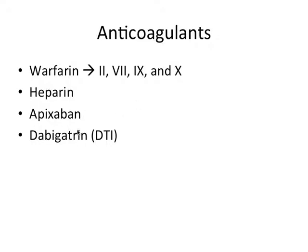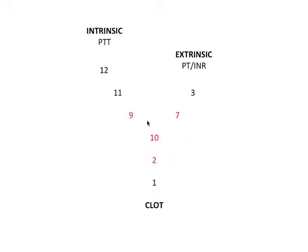Apixaban, also known as Eliquis, directly inhibits factor 10a. So that's how it stops the process. Now dabigatran is a direct thrombin inhibitor, or DTI, because it binds directly to thrombin, or factor 2a at its active site, inhibiting it. So that's just some examples of how we can pull everything together, how the mechanism of action of those drugs is actually pretty simple when we have a drawing like this and understand how it works.